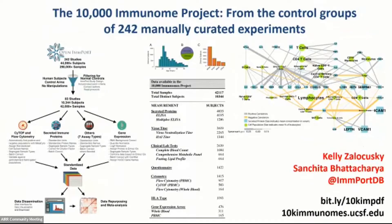One of my favorites is the 10,000 Immunome Project. When you have tens of thousands of humans studied, you can take all the normal, healthy controls — we have 200 words for 'normal' in biology — and make a dataset out of them. We harmonized data from 242 different manually curated experiments covering CyTOF, flow cytometry, secreted immune proteins, immunokines, gene expression from PBMCs and whole blood, and ELISA measurements, all standardized to correct for batch effects.